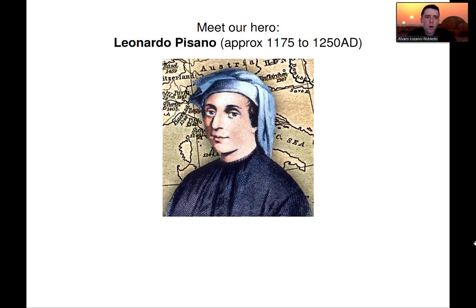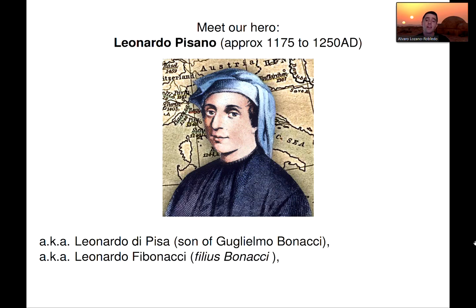You probably know of Leonardo Pisano, but perhaps by another name. He went by a few other names. He was also known as Leonardo di Pisa because he was born in Pisa, but also because he was the son of Guglielmo Bonacci. He's actually known better as Leonardo Fibonacci, Filius Bonacci, meaning the son of Bonacci.